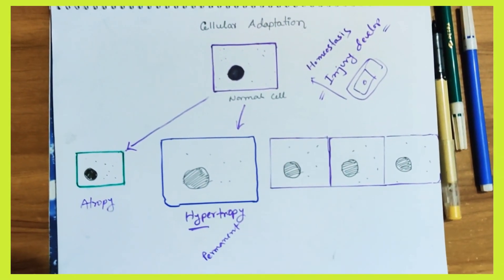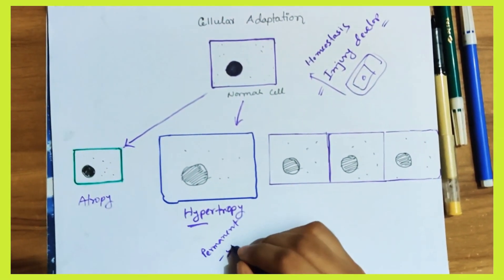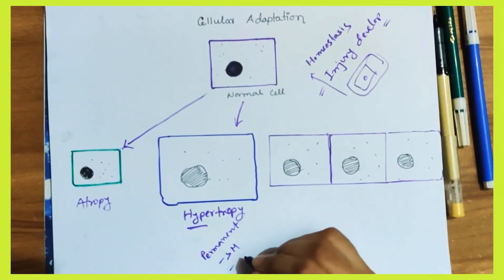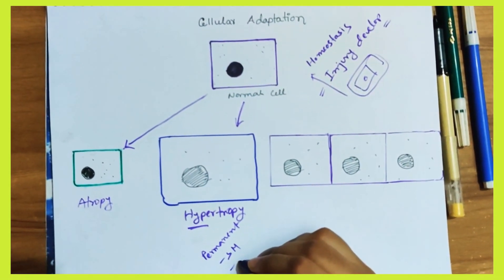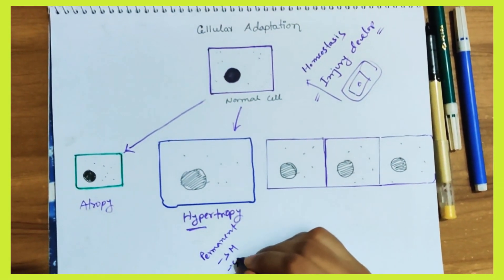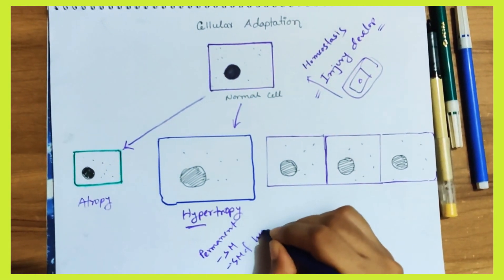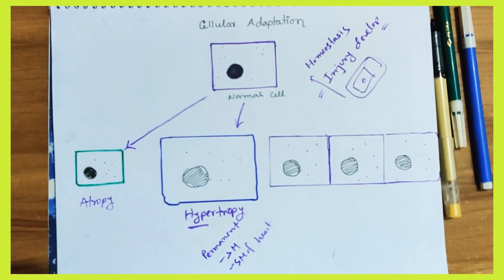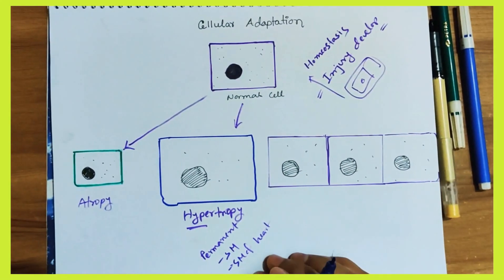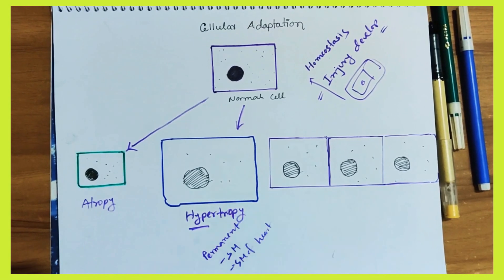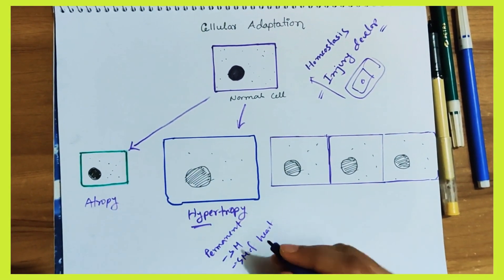Hypertrophy occurs in permanent cells — it is called a permanent cell. Examples include skeletal muscle, smooth muscle, smooth muscle of the heart, and cardiac muscle. So, hypertrophy is very important in these tissues.